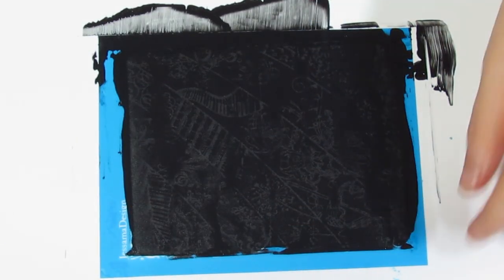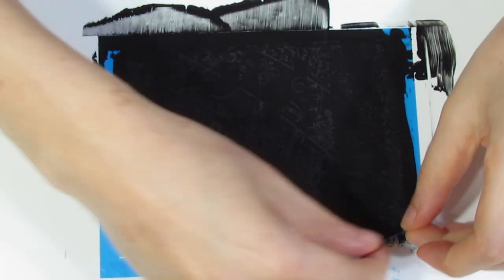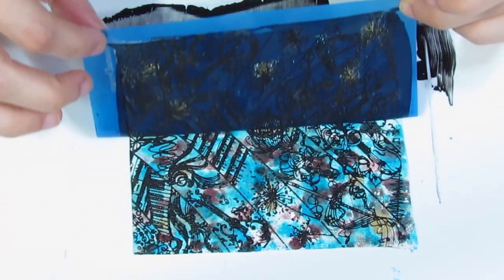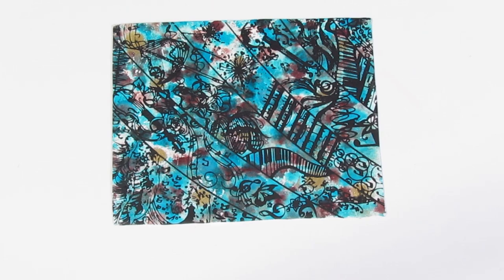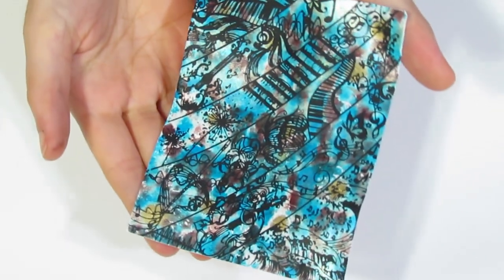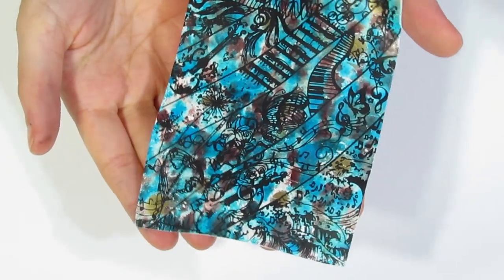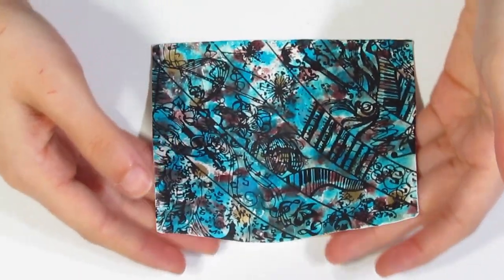The less times you have to clean a silkscreen of alcohol ink the better. Alcohol ink can be quite difficult to get out of silkscreen. And lift it up and clean your screen. And there we go. It's completely dry. And I really like how this has come out. It kind of reminds me of a watercolor painting almost.